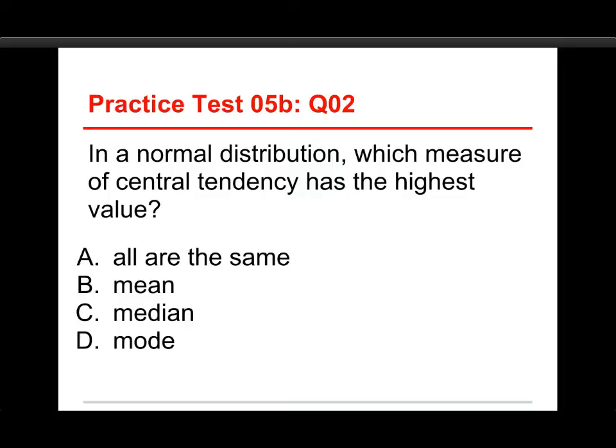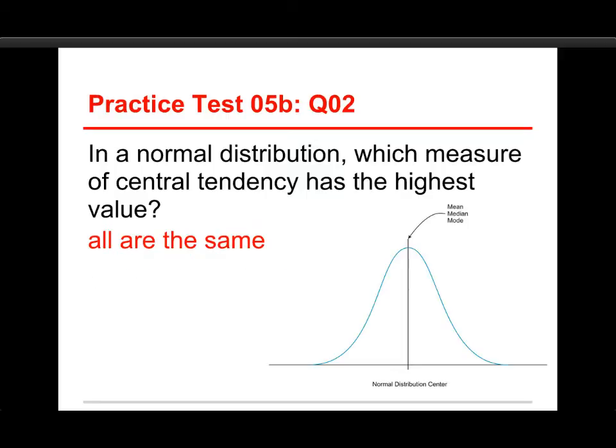Number two, in a normal distribution, which measure of central tendency has the highest value? The choices are all are the same, or the mean, the median, or the mode. Well, the answer to this one is in a normal distribution, they're all the same.